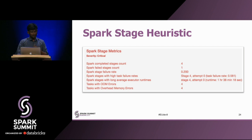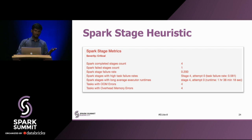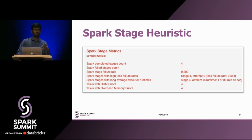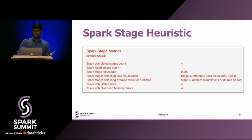Next, we have a Spark stage heuristic that reports the task failure rate. A stage can succeed in spite of many tasks failing within it. So if there is a high percentage of tasks that fail, this heuristic flags those jobs. If tasks fail due to an out-of-memory error, there are a bunch of other tasks being retried, leading to more resource consumption and the application taking longer to run. This heuristic flags all those jobs and tells how they can be fixed.